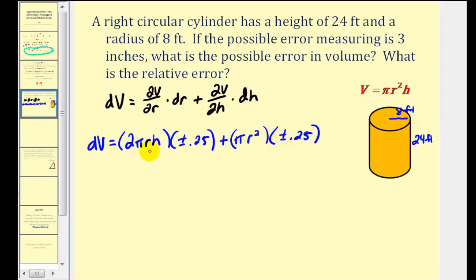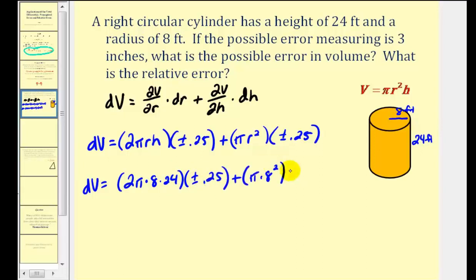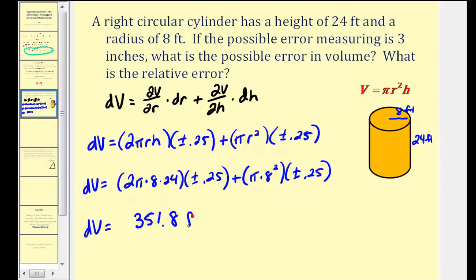Now we have all the information we need. The last step is to substitute r equals 8 and h equals 24. When we type this into our calculator, we're not going to be able to type in the plus or minus, so we normally just use the positive 0.25. That's going to give us 351.8 cubic feet, and then we'll put a plus or minus on there. This is the propagated error — meaning when we calculate the volume, it could be off by as much as this based upon the error in the measurement.